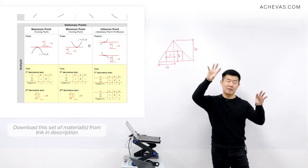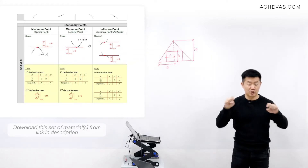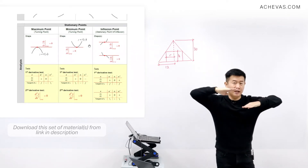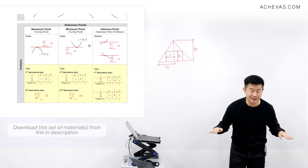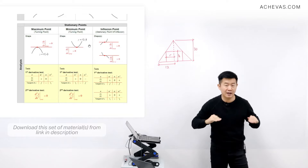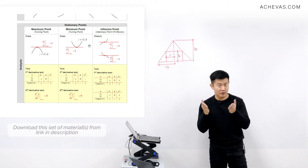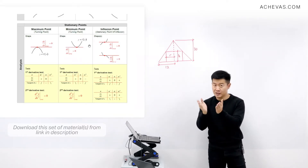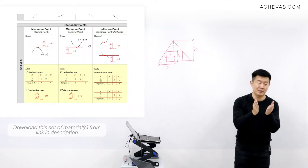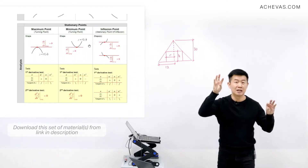The common feature of maximum and minimum points is that when we draw a tangent to those points, the tangents are parallel to the x-axis. When a line is parallel to the x-axis, the gradient is equal to zero. So using differentiation, we find dy/dx and let dy/dx equal zero. This helps us locate the turning points.